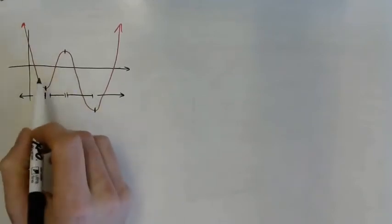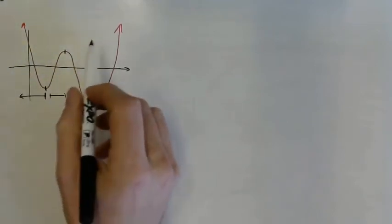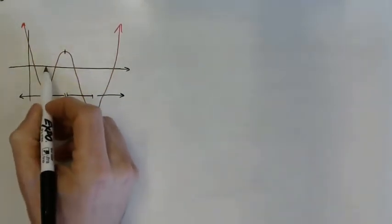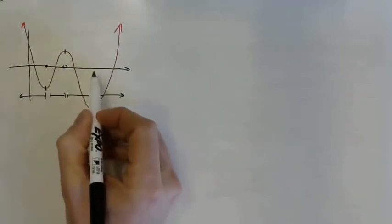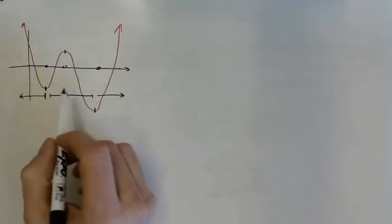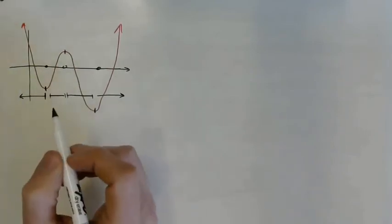Every minimum or maximum is a zero of the derivative. So if we took the derivative of our red function, we would get a zero at each min and max. That means all we need to do is differentiate, then set the function equal to zero and solve it.